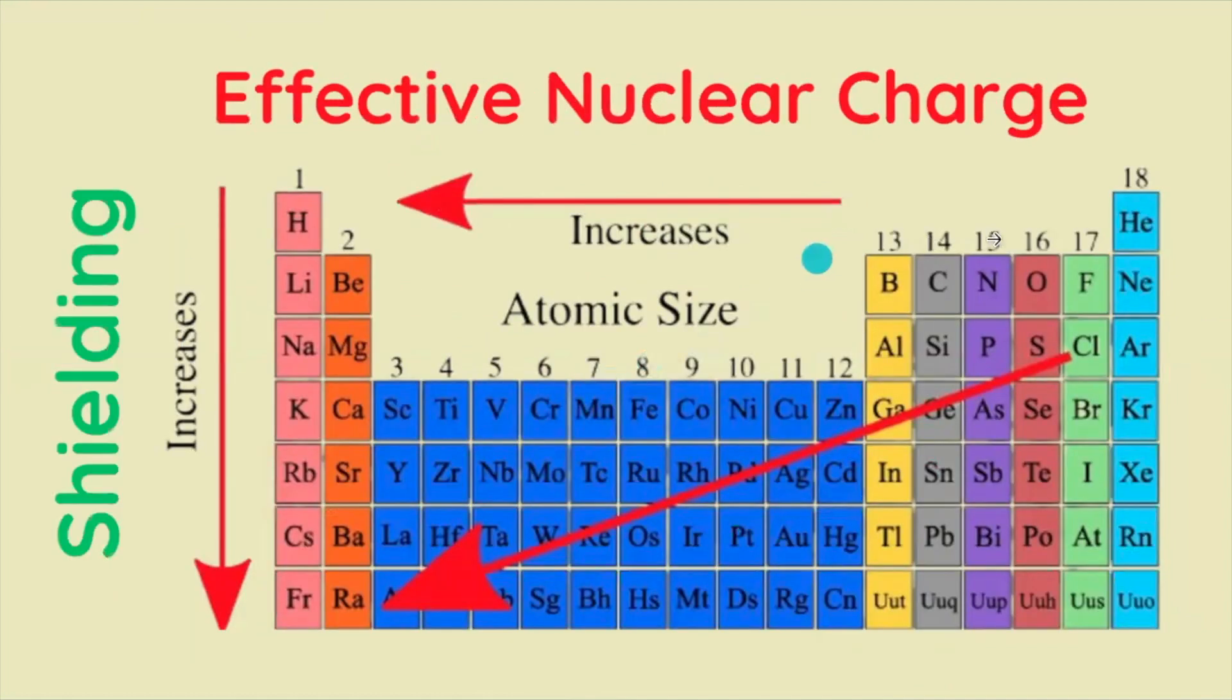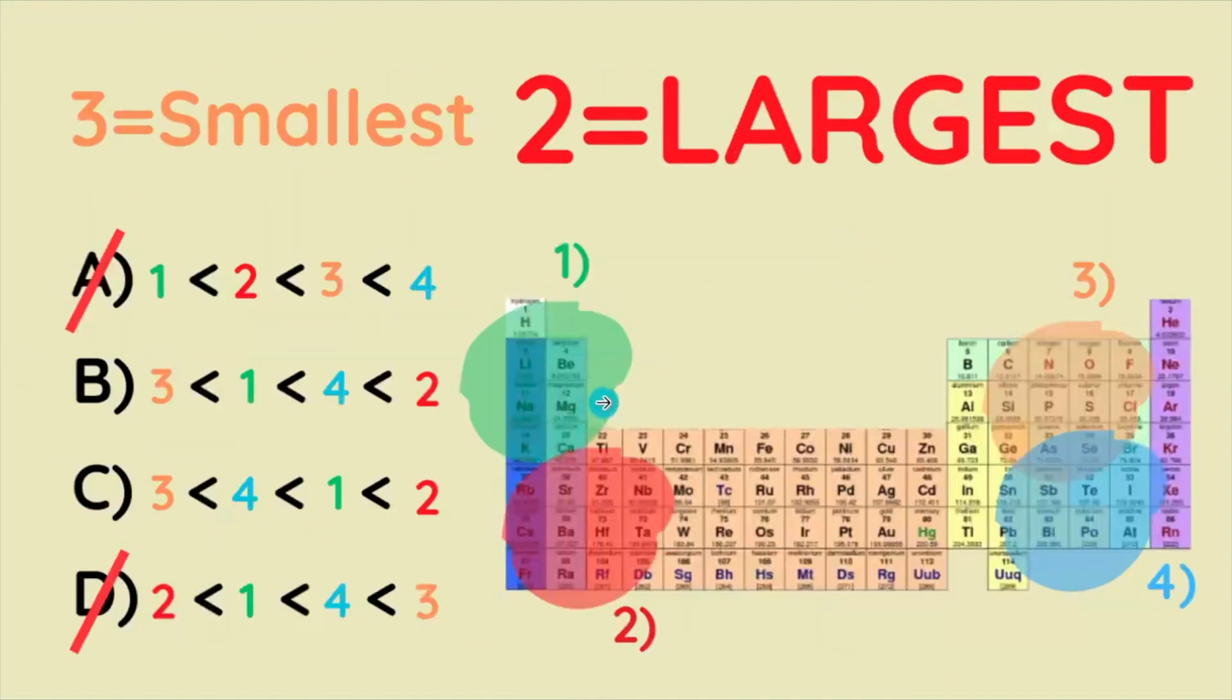Putting this all together, atomic radius increases to the left and down the periodic table. So that means that 2 is the region with the largest atomic radius and 3 is the smallest.